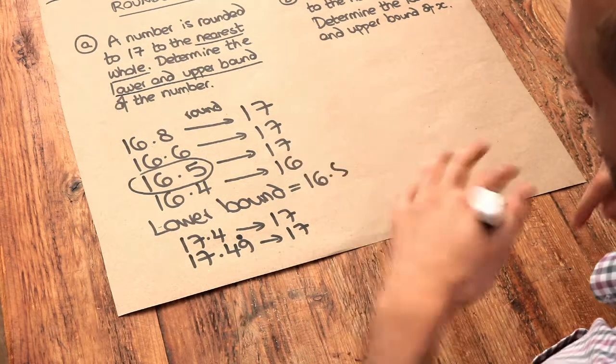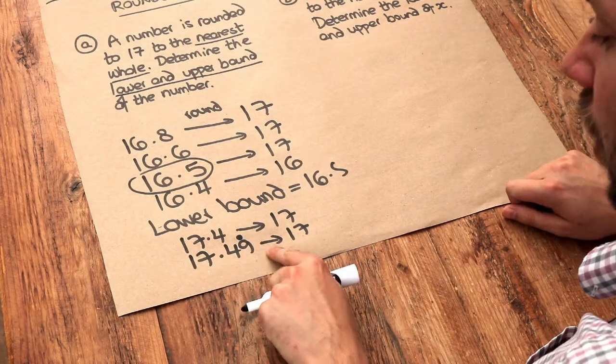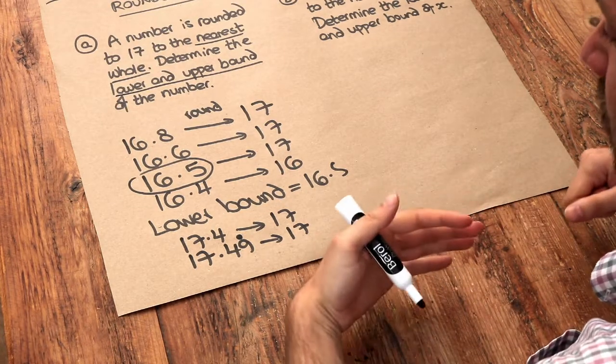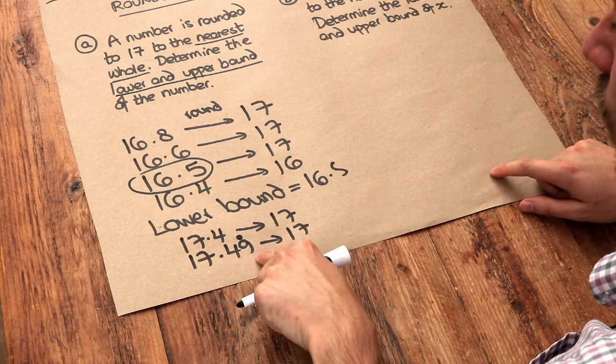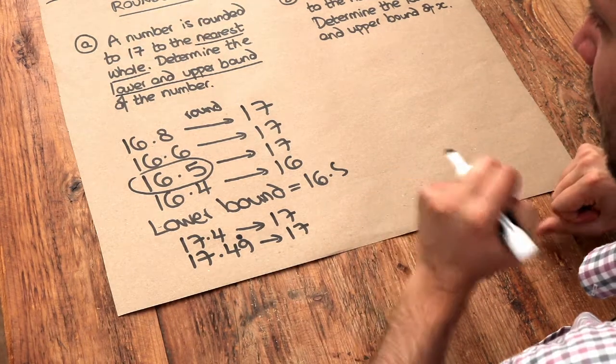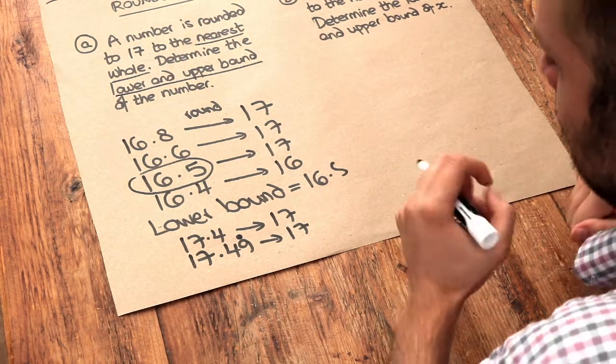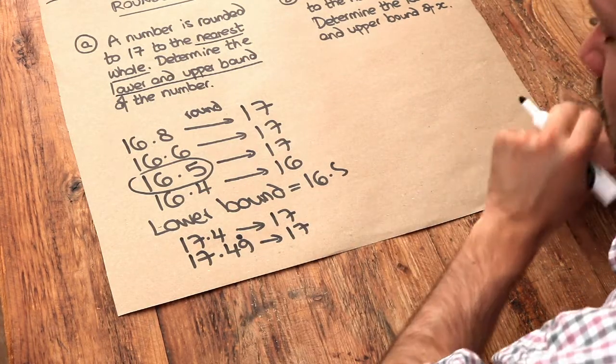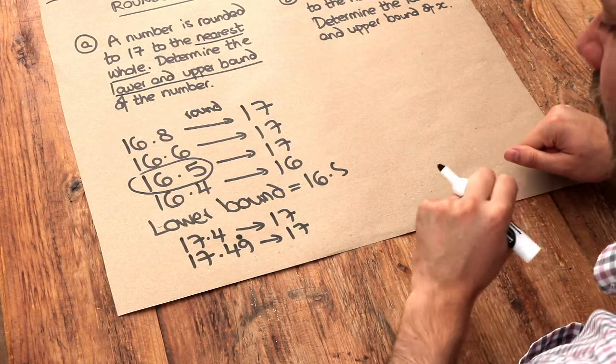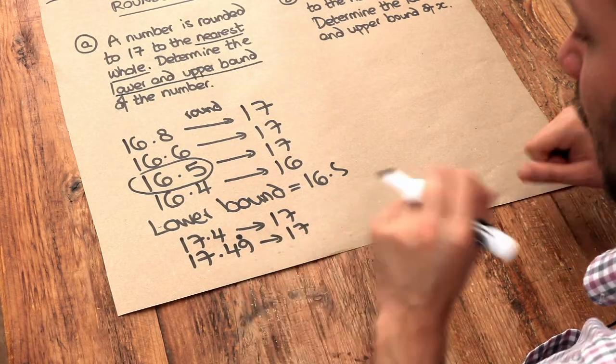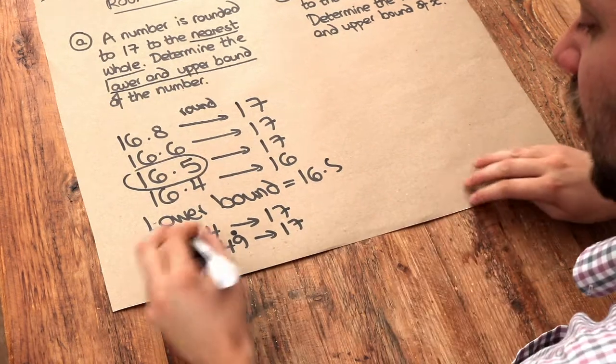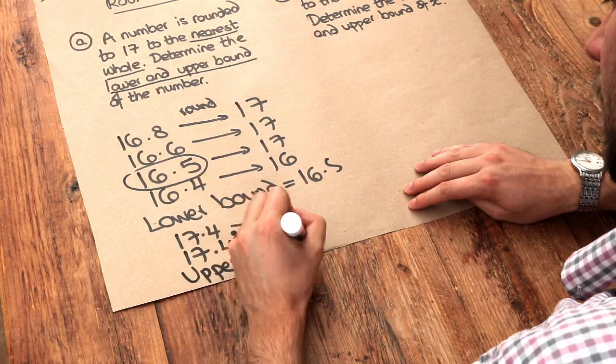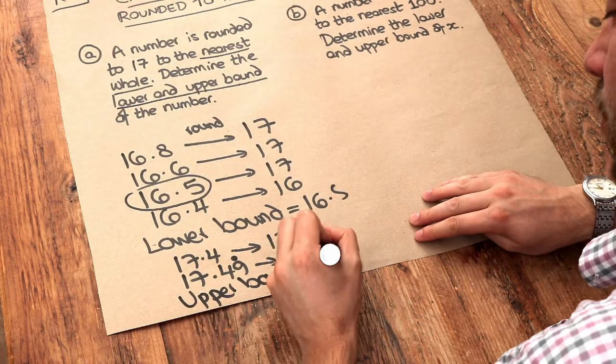However, and this gets a bit weird, 17.49 recurring is effectively 17.5. It's in fact possible to algebraically prove that 17.49 recurring is the same as 17.5. And it's basically because it's infinitesimally close. 0.49999999999999999 going on forever is basically the same as 0.5. They are actually the same value. So weirdly, we say that the upper bound is equal to 17.5.